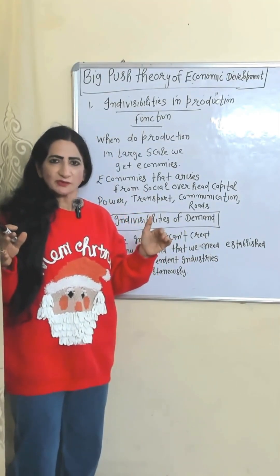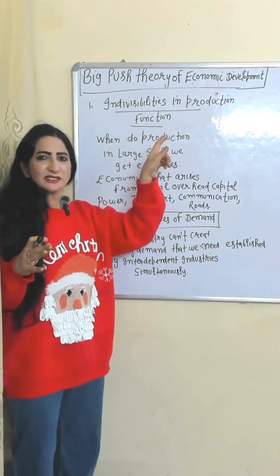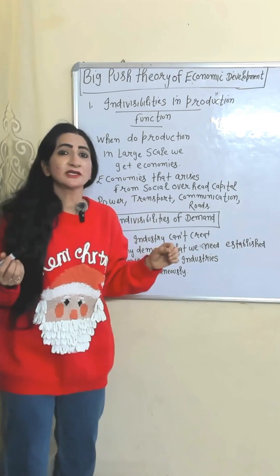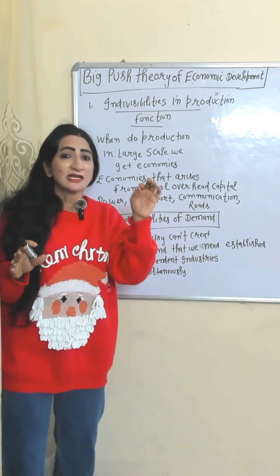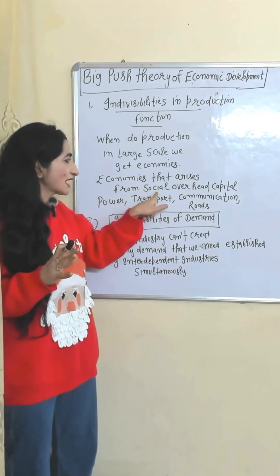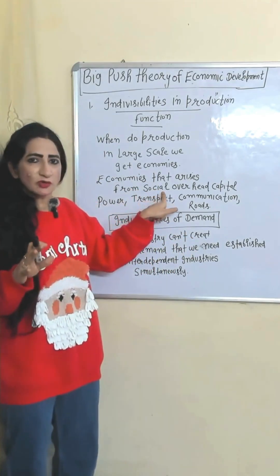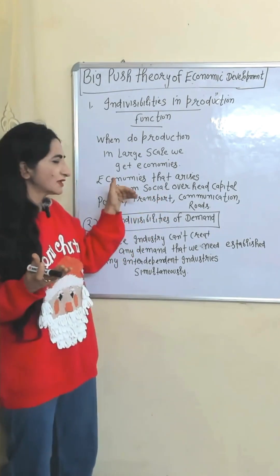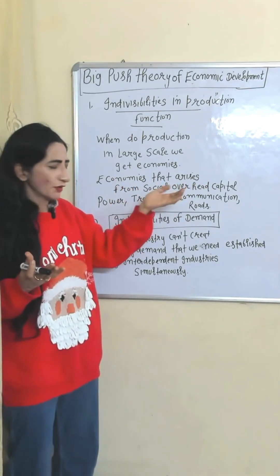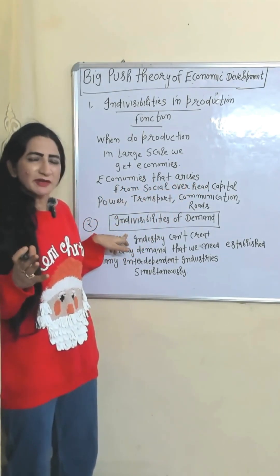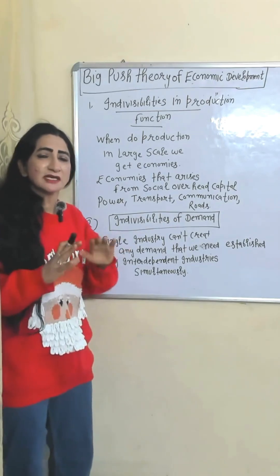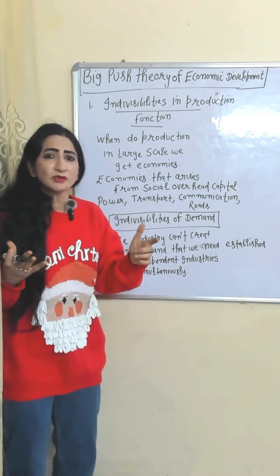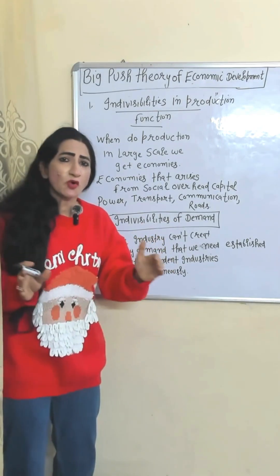This theory talks about three types of indivisibilities. First, indivisibilities in the production function: when you do production on a large scale, you receive economies of scale. This theory focuses on economies arising from social overhead capital — for example, economies from power, transport, communication, or roads. Second, indivisibilities of demand: a single industry cannot create any demand, which is why we need to establish many interdependent industries simultaneously.